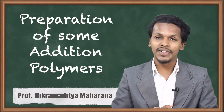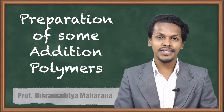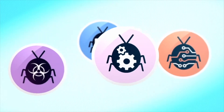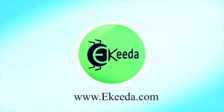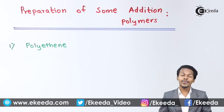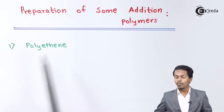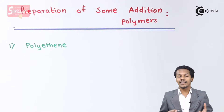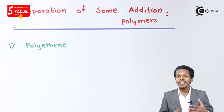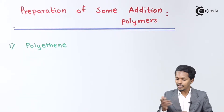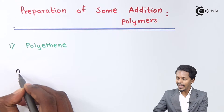We are going to talk about the preparation of some addition polymers, starting with the first one — how we can prepare polyethene. As the name suggests, polyethene is composed of various repeating units consisting of the monomer ethene. Suppose we consider n moles of ethene, that is CH2=CH2.